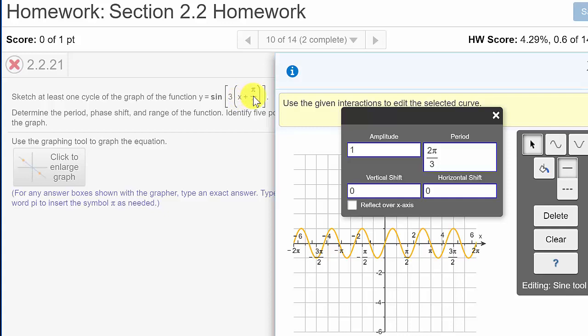But what they've done is this 3 is factored out. Okay? And so this right here, this pi over 3, when the 3 is factored out like this, this is your phase shift. Okay? So that would just be negative pi over 3. You've got to use the opposite sign, so that would be negative.